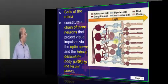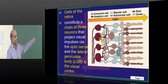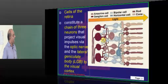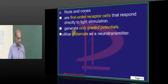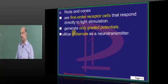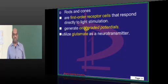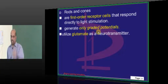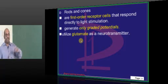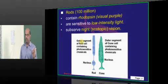If you look at the cells of the retina, there is a chain of three different neurons that project visual impulses via the optic nerve and ultimately through the lateral geniculate body to the visual cortex. What are the various types of cells? You have the photoreceptors, which are called rods and cones. They are the first order receptor cells that respond to light stimulation. They basically generate only graded potentials, not action potentials. They utilize glutamate, one of the favorite MCQ topics. Glutamate is the neurotransmitter used by rods and cones. We will discuss this more in physiology.